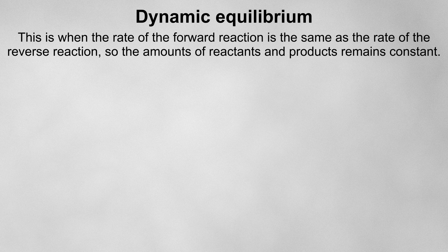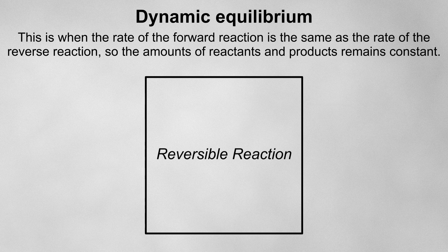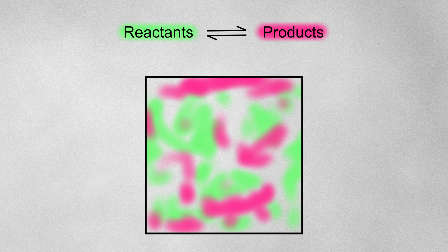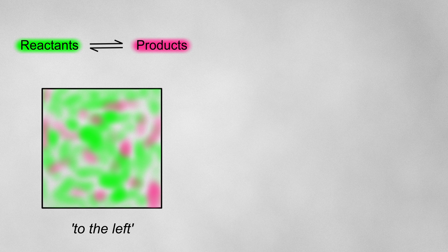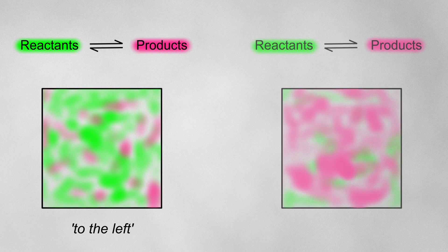Let's quickly recap what an equilibrium constant is, just so we're all on the same page. A dynamic equilibrium is set up when you put a reversible reaction into a closed system, or a system where no substances can get in or out. Because the reaction is reversible, our reaction mixture will always contain some reactants and some products. If it's mostly reactants, we say that the equilibrium position is to the left, and if it's mostly products, we say that the equilibrium position is to the right.